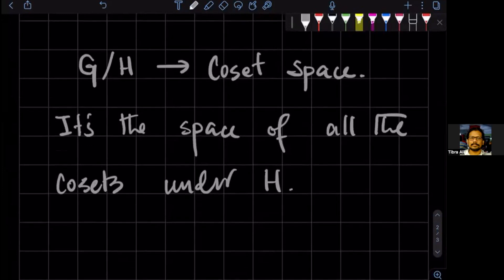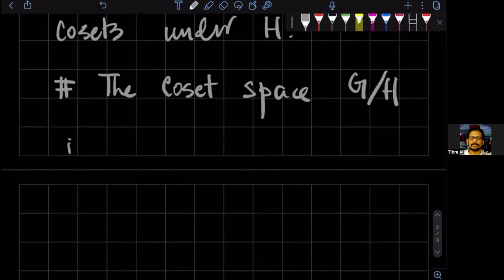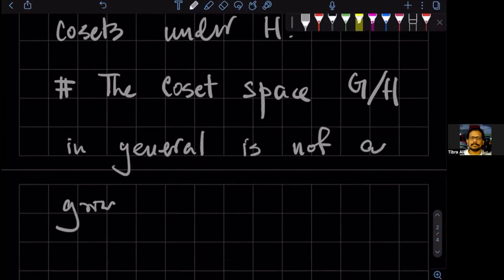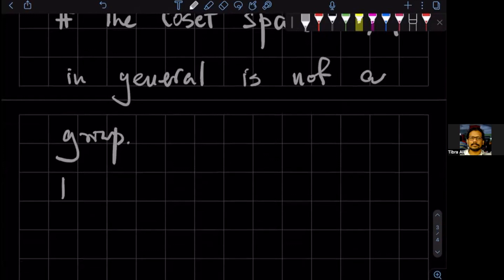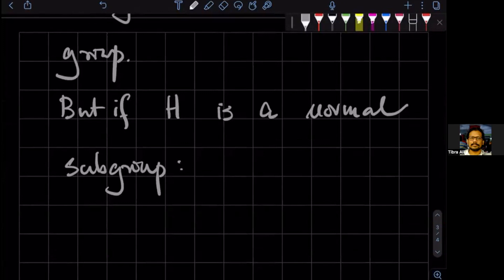So the coset space is in general not a group. The coset space G over H in general is not a group, but if H is a normal subgroup, what does H being normal subgroup mean?